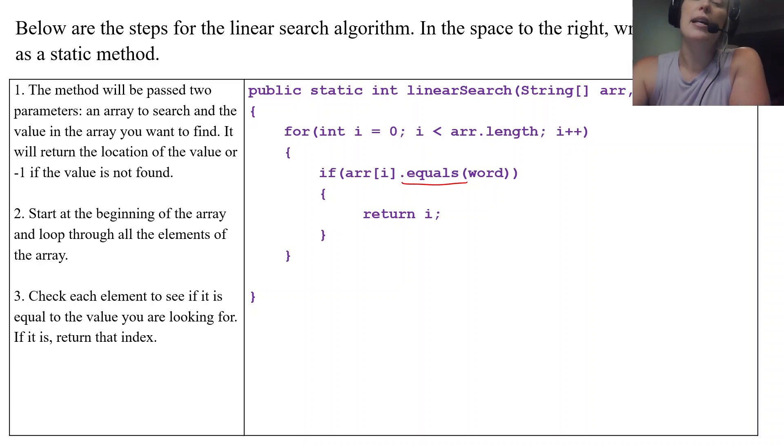If it is, I want to return that index. So notice the way it's written, this linear search will return the index that word is located in first. So if you have a huge array of string values, it's going to return the first location of that word. Even if the word appears multiple times throughout the array, it's going to return that first location.